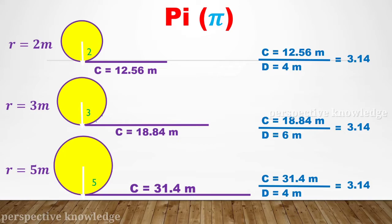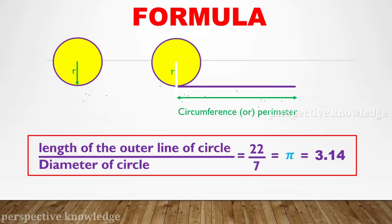Same for the radius of 3m — the circumference to diameter ratio is 3.14. So basically, for any radius — for example, 2, 3, 5, 10 — if you draw any circle, the ratio of the circumference to the diameter of the circle is always 3.14. That is why 3.14 is used as the circular formula constant.